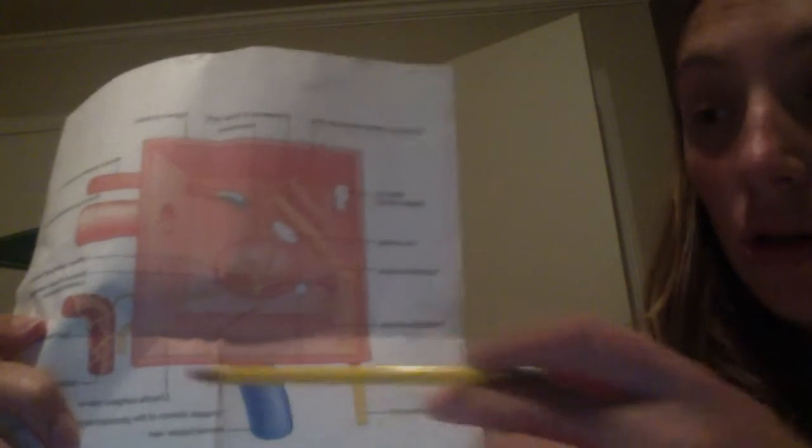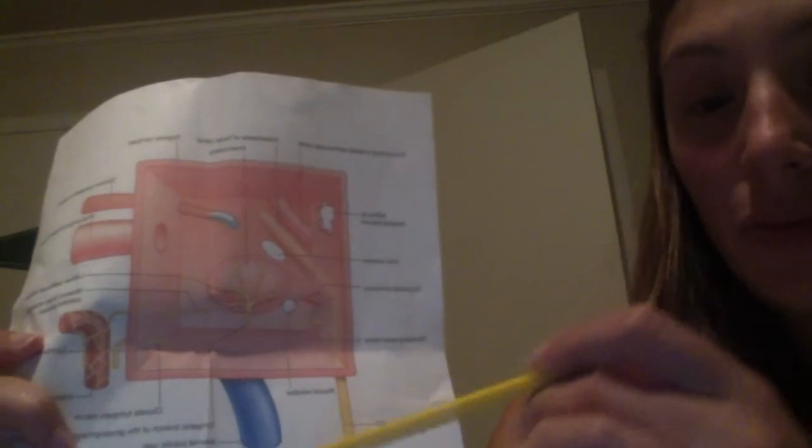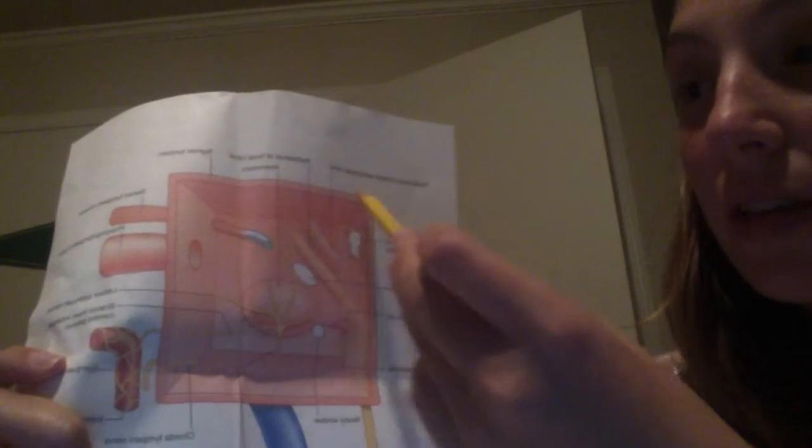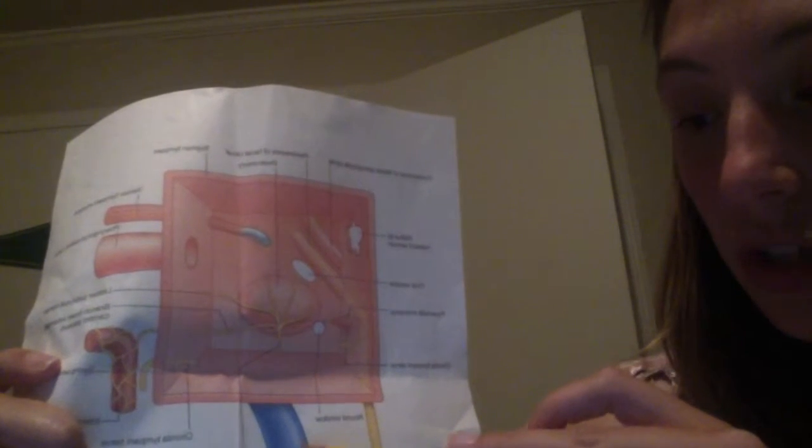Now we're going to talk about the middle ear as six walls or six different cavities like a cube. Let's talk about some of the landmarks on this cube. On the superior wall of the middle ear, we have the tegmen tympani. On the inferior wall, we have the jugular vein.